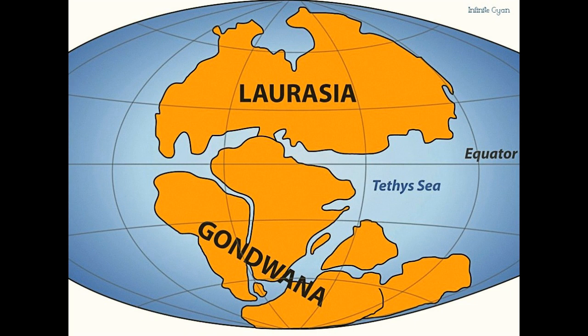The Gondwana land consisted of present-day Africa, Madagascar, India, Australia, South America, and Antarctica. The Laurasia consisted of North America, Europe, and Asia. Later, Gondwana land and Laurasia continued to break into several smaller continents that exist today.